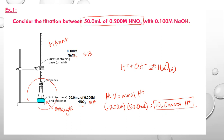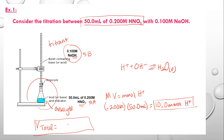Next, we figure out the millimoles of the base being added. You have to recalculate this each time because you're adding the base from the burette to the acid in the flask, and V_total changes each time. Always take molarity × volume of your titrant to get millimoles of the titrant, then proceed with the calculations. We'll continue with this problem in the next video.